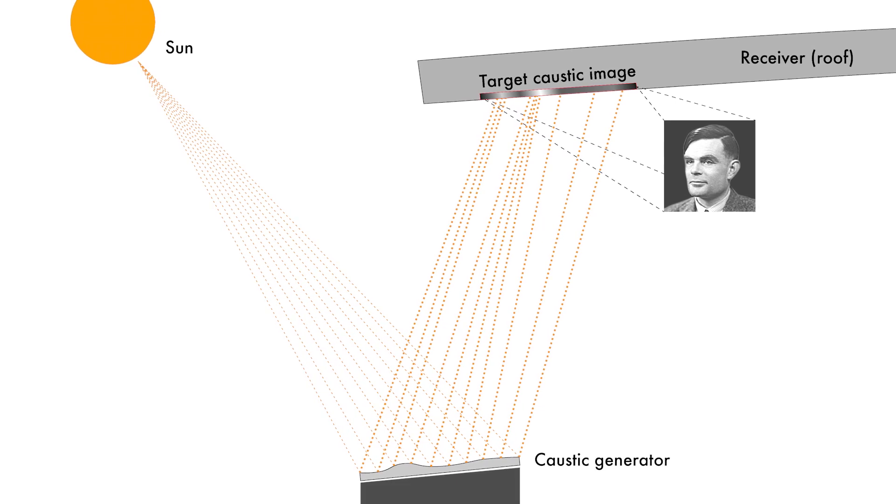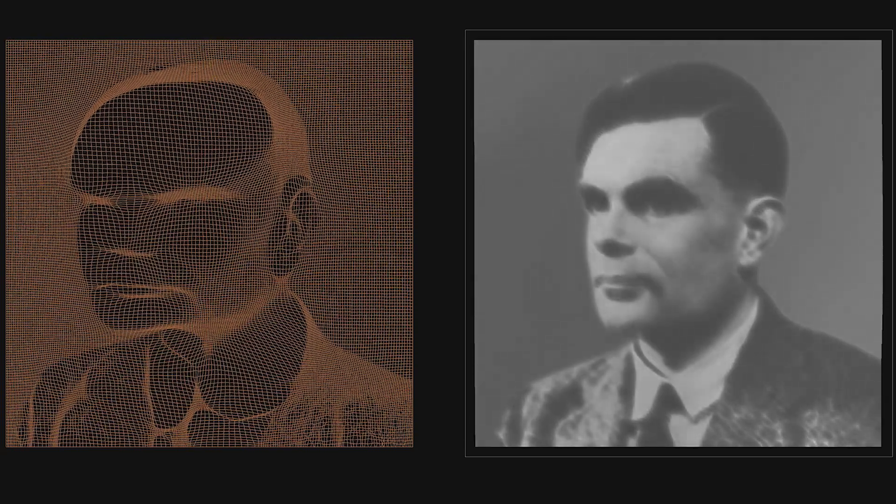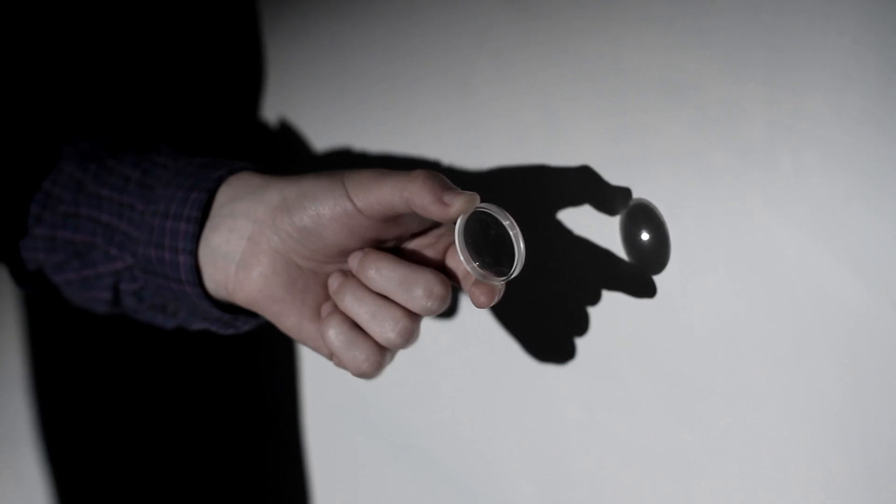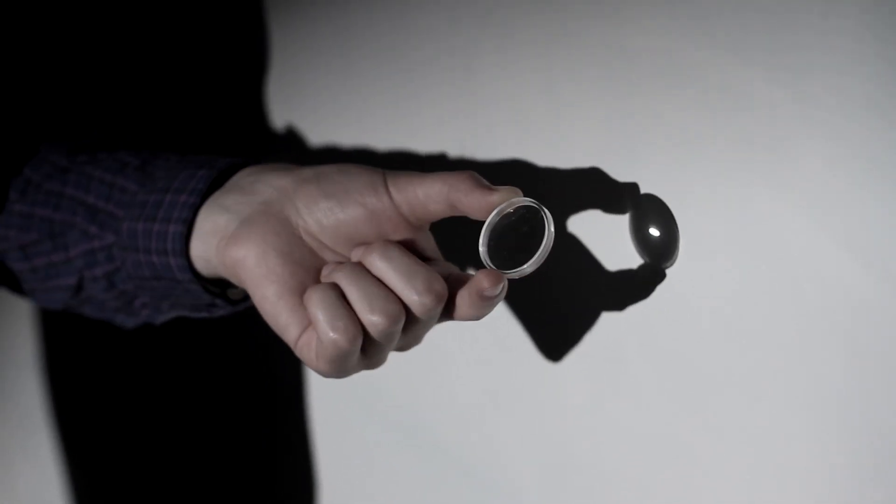The way the software works is: first we have to find the target configuration we're going to use to generate these images. We need a source of light — this could be the sun or a flashlight — and it's going to hit an object which we call the generator, targeted at some kind of receiver, such as the wall or, in this case, the roof. Once we specify exactly where these three objects are in space, the software changes the generator so that light from the source is redirected onto the receiver. It focuses light in certain areas by changing the surface like a lens, and in other places spreads the light out to create darker areas. In that way, we can make any kind of image.